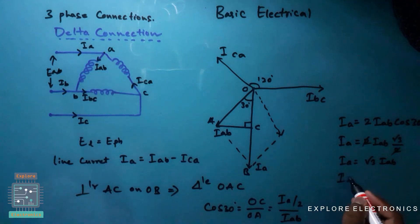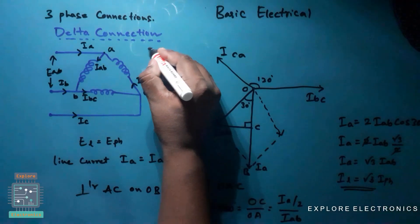What is Ia here? It is line current. What is Iab here? It is phase current. So Ia line current will be equal to root 3 times I phase current. This is what we are trying to derive here. So line current will be equal to root 3 times the phase current in delta connection.